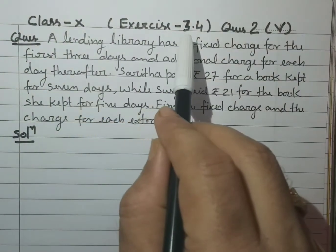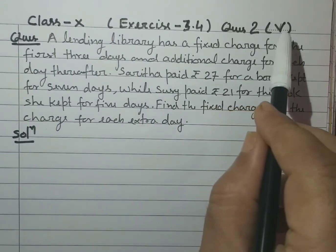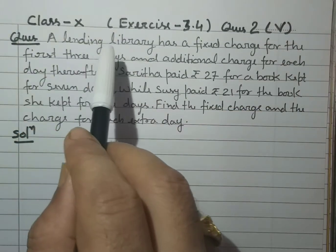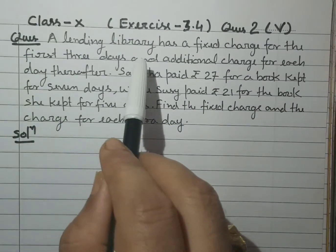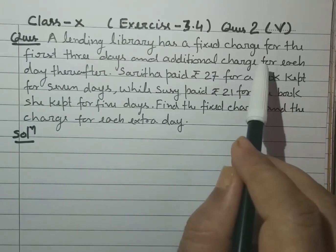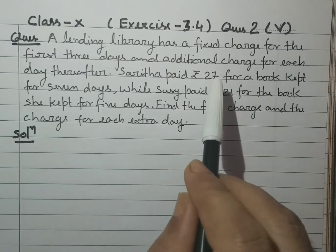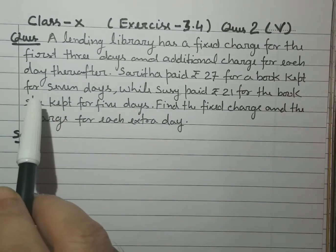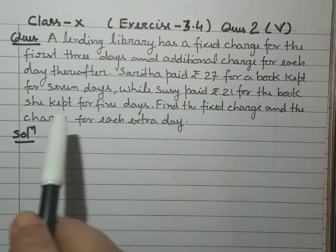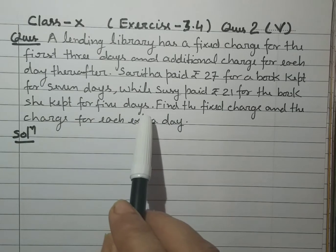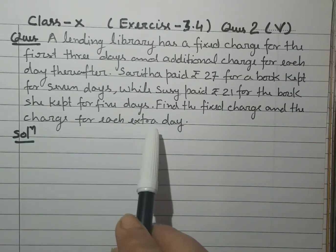Today's topic is Exercise 3.4, Question 2nd, Part 5th. The question is: a lending library has a fixed charge for the first three days and an additional charge for each day thereafter. Saritha paid Rs. 27 for a book kept for seven days, while Sashi paid Rs. 21 for the book she kept for five days. Find the fixed charge and the charge for each extra day.